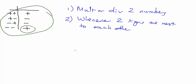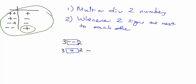The second time the table applies is whenever two signs are next to each other. Say you're doing three take away minus two - you can clearly see two signs next to each other. The table says instead of writing those two minuses, just replace it with a plus. So three minus minus two is the same as three plus two.